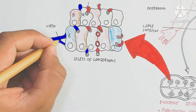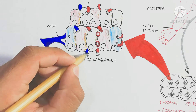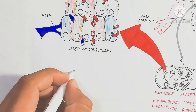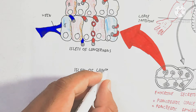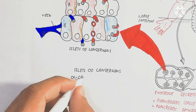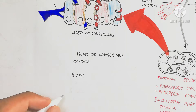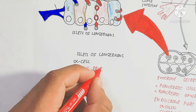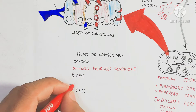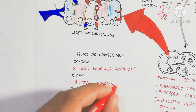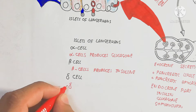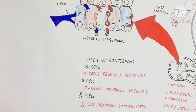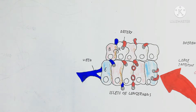Alpha cells produce glucagon, which inhibits insulin production. Glucagon is used for glycogenolysis. Beta cells produce insulin, which has the opposite effect. Delta cells produce somatostatin, which is used for growth hormone regulation including muscle growth and bone density.